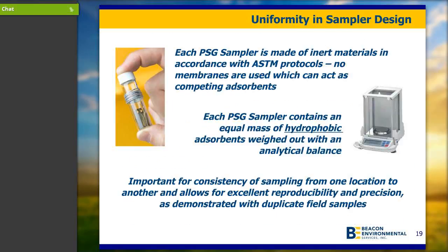Talking about quality, we make sure there's uniformity with our samplers and that we don't use any competing adsorbents. The hydrophobic adsorbent inside our samplers is measured using an analytical balance, so we have precision from one sampler to another, which is extremely important. Other vendors just extrude or pour adsorbent into their material without ensuring reproducibility from one sampler to another. This is a key part of Beacon's technology, which allows us to have high reproducibility and excellent correlation with soil gas, soil, and groundwater data, demonstrated through all the field sample duplicates we analyze.